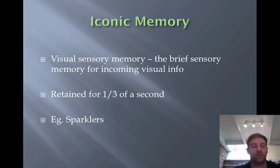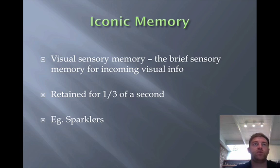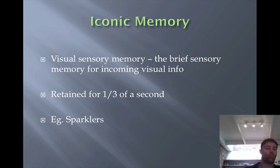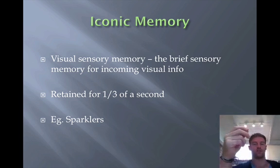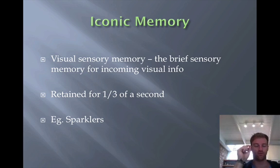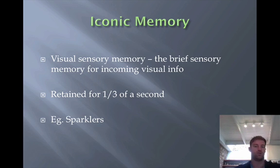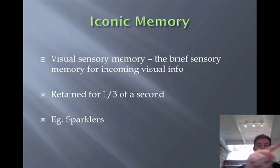One of these sensory registers is iconic memory — our visual sensory memory. It's very brief, retaining information for about one third of a second. The best way to think about this is if you've ever been outside at night with a torch or sparklers and whizzed them around really fast — it leaves a tail behind. That's because the image is so bright that as it moves, your visual system holds onto that memory in the darkness. The little tail that stays behind the sparkler is evidence of your iconic memory — that one third of a second that it sticks around.